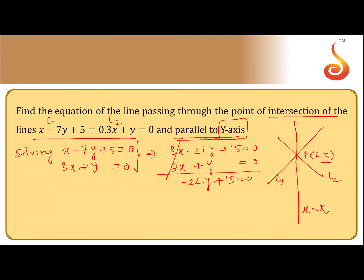So the y-coordinate is 15 divided by 22. From the second equation, 3x equals minus y equals minus 15 over 22, which implies x equals minus 5 divided by 22.